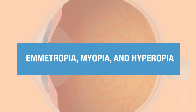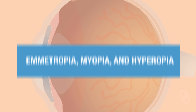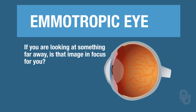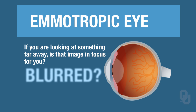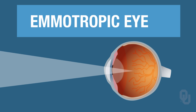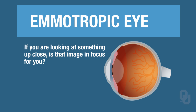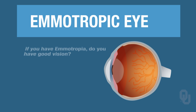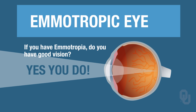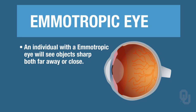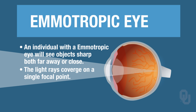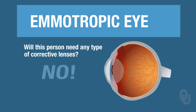In this video, we will learn about far-sightedness and near-sightedness. Let's begin with an emetropic eye. If you're looking at something that's far away, is that image in focus for you — sharp or blurred? Sharp, because your light rays converge on a single focal point. If you're looking at something up close, is that image blurred or sharp? Sharp. So if you have emetropia, you have good vision. This individual will see a sharp image regardless of whether it's far away or close up, and they won't need any corrective lenses — they have a perfect eye.